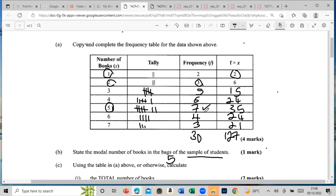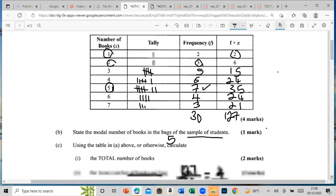It says using the table in (a) above or otherwise, calculate the total number of books. We did that already, so this was 127.